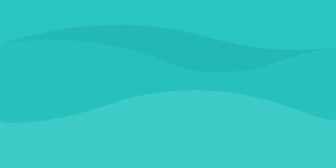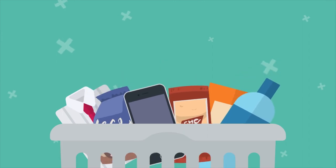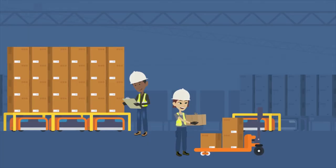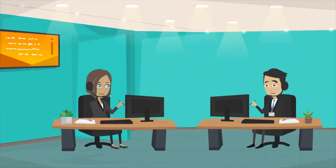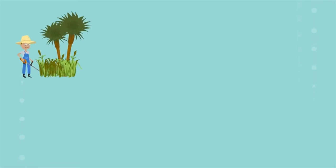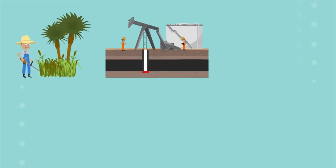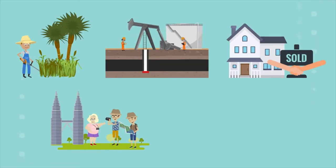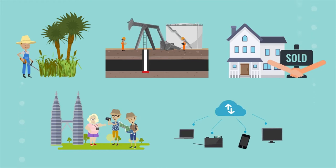There are a variety of businesses operating in different industries. These include, among others, companies involved in merchandising, manufacturing, and services, which operate in industries such as agriculture, oil and gas, real estate, tourism, information technology, and so forth.